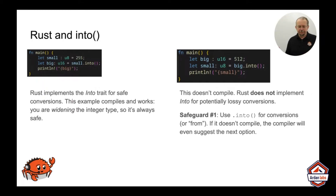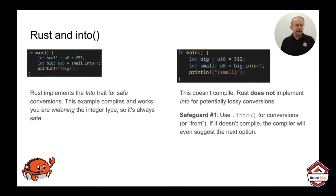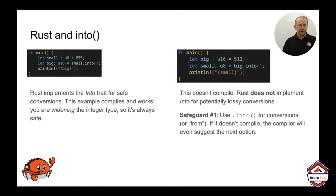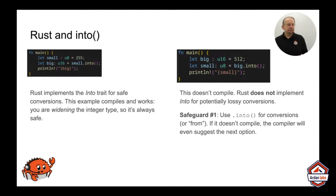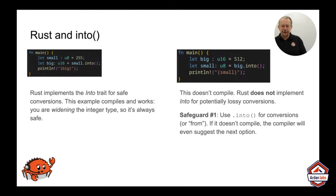Rust tried to make this a little easier by having a trait called `into`. `into` allows you to say variable_name.into(), and the compiler will try to figure out what it's being converted into. If there is an implementation of that trait to go from one type to another, it will automatically work. In this example: small u8 of 255, big u16 — small.into() will work because going from a u8 to a u16 is safe. Rust has carefully and painstakingly added in entries for all of the safe conversions that will not fail, and has not entered in conversions for all of the ones that are unsafe.